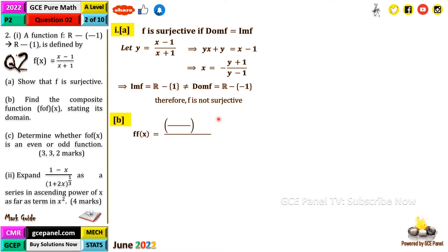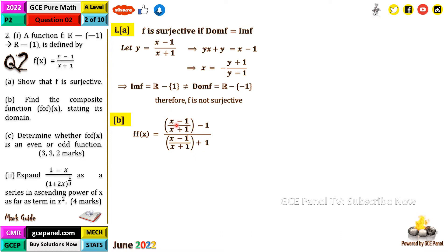f∘f(x) means we take the function f and substitute x with f(x). Our f(x) is (x − 1)/(x + 1), so wherever we see x we replace it with (x − 1)/(x + 1).